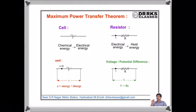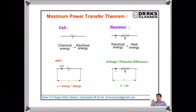EMF is the potential difference between the two terminals of a cell when the cell is in open condition, that is when the current drawn from the cell is zero. EMF is nothing but energy per unit charge and its unit is volts. Generally, we refer to the potential difference across a resistor as voltage, which is equal to V = RI according to Ohm's law.